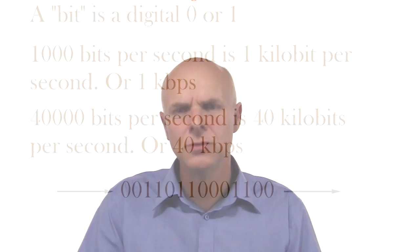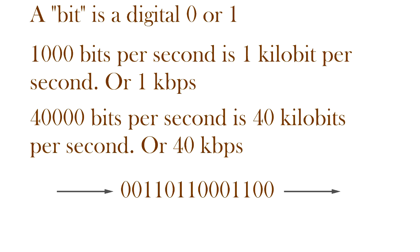The first term is data rate. I'll go through a brief explanation of what data rates mean, starting with the dial-up modem from the previous video. The dial-up modem provided a data rate of around 40 kilobits per second — maybe more, maybe less, but around about that. 40 kilobits per second is 40,000 bits per second. A bit is a digital zero or one. A thousand bits per second is one kilobit per second, so 40,000 bits per second is 40 kilobits per second.